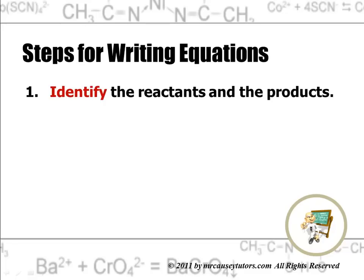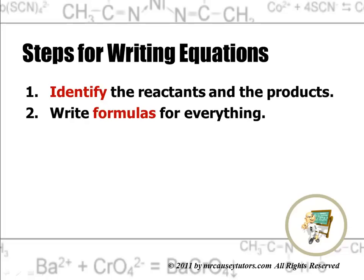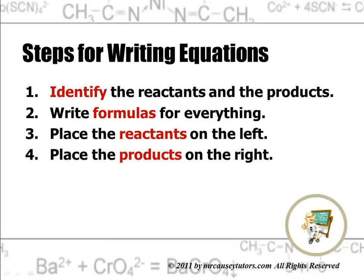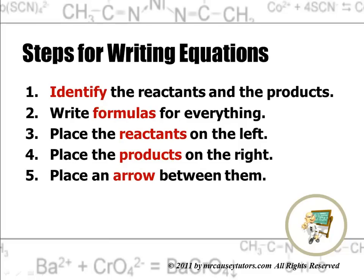Steps for writing equations: first, identify the reactants and products. If you don't know how to write chemical formulas and names, go back and look at those lessons — practice and send me an email if you need practice sheets. Second, write formulas for everything, both the reactants and the products. Third, place the reactants on the left, the products on the right, and put an arrow in between them. This is easy if you know how to name compounds and write formulas. Make sure you know your periodic table and have your list of polyatomic ions.